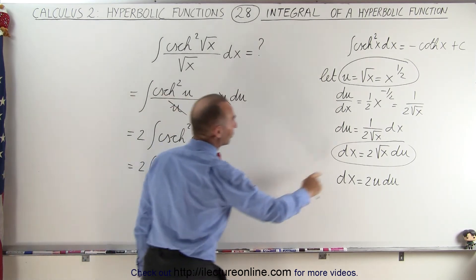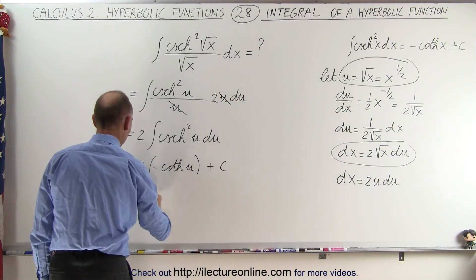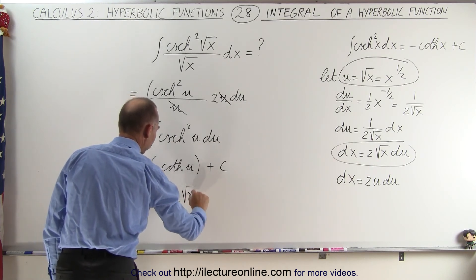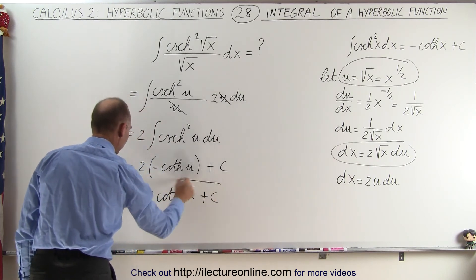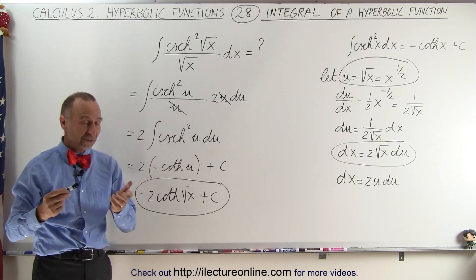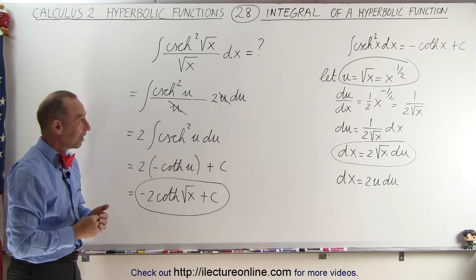And then we can substitute back in. Since u is equal to the square root of x, we can say that this is equal to minus 2 times the hyperbolic cotangent of the square root of x plus a constant of integration. And that is then the result of the integral, and that's how it's done.